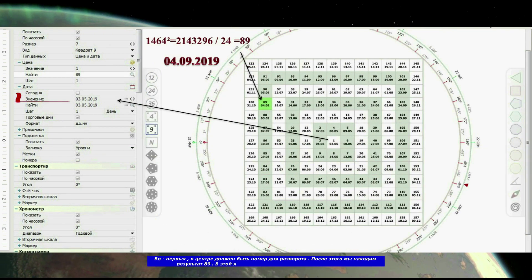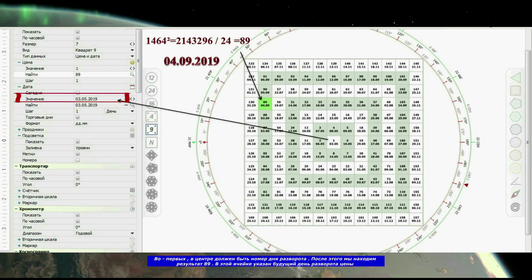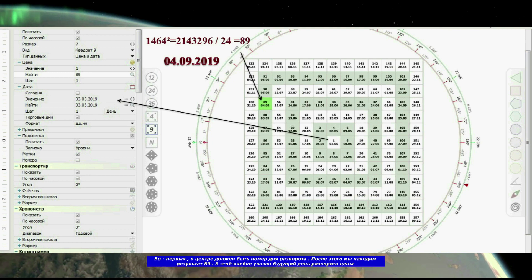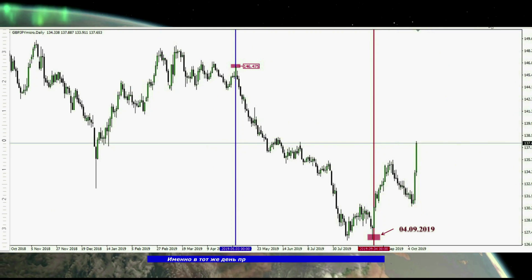First, there should be a reversal day number in the center. After that, we find the result 89. In this cell there is a future day of the price reversal. It is on the same day that the main trend reversal occurs.